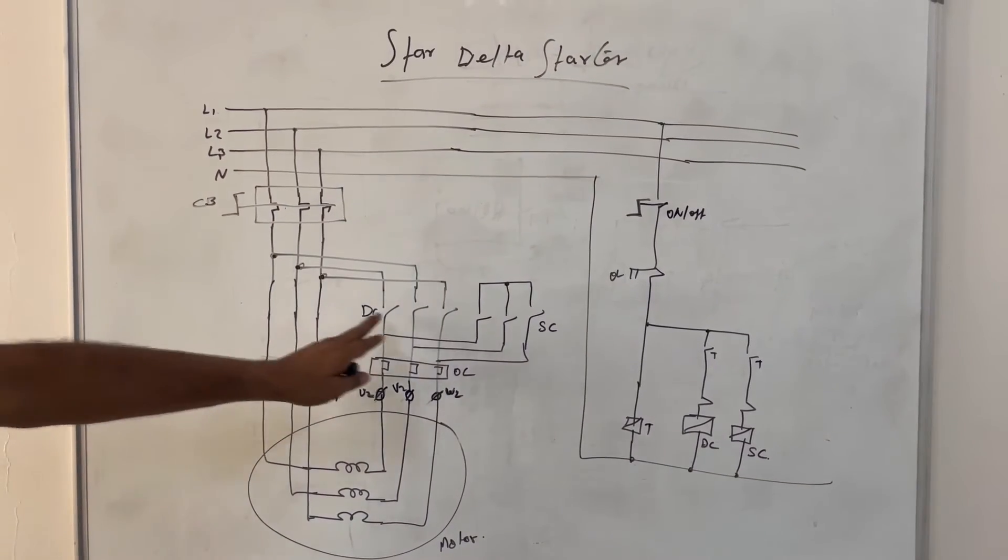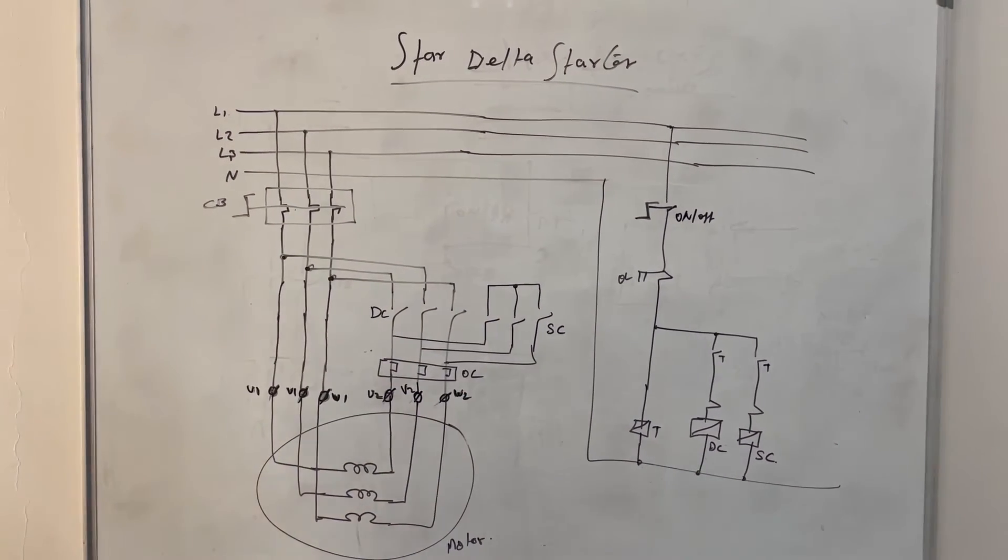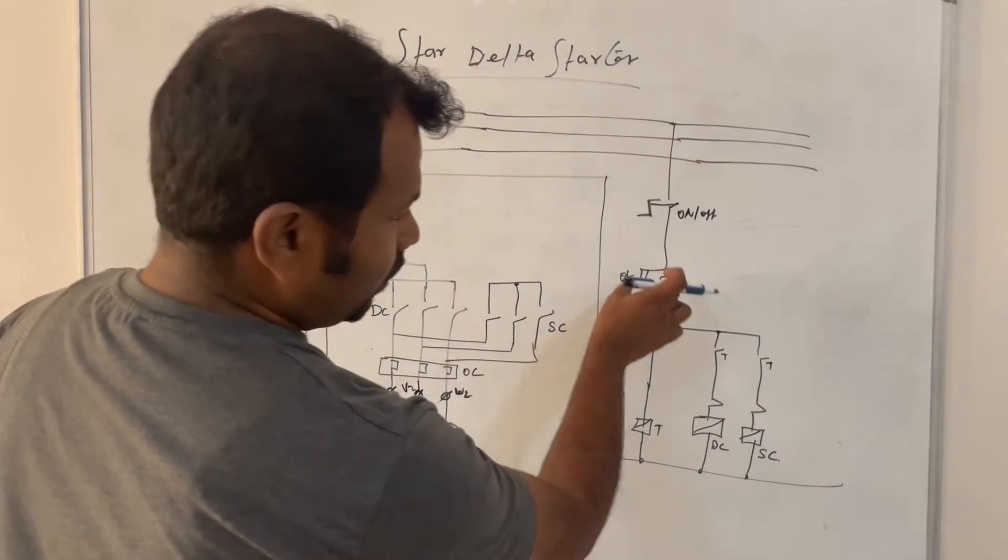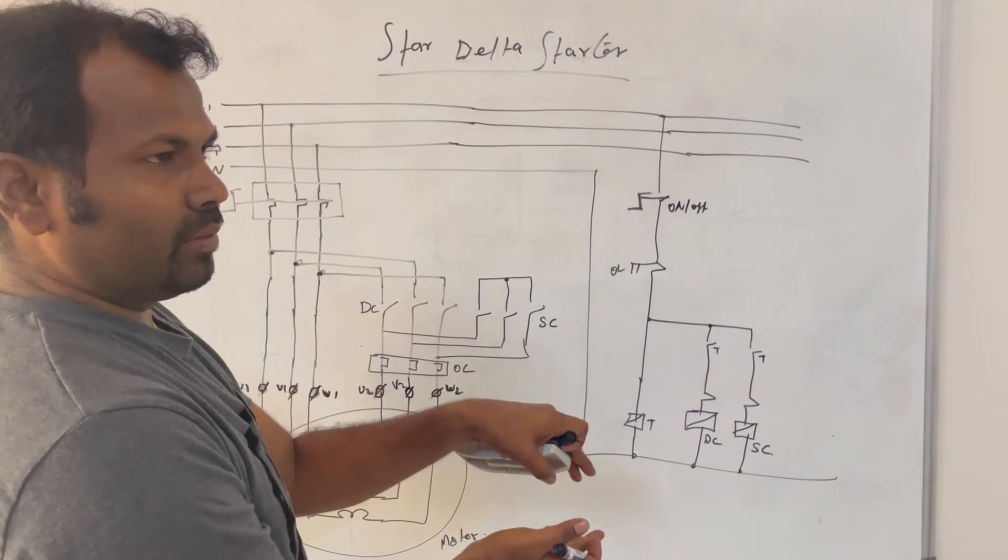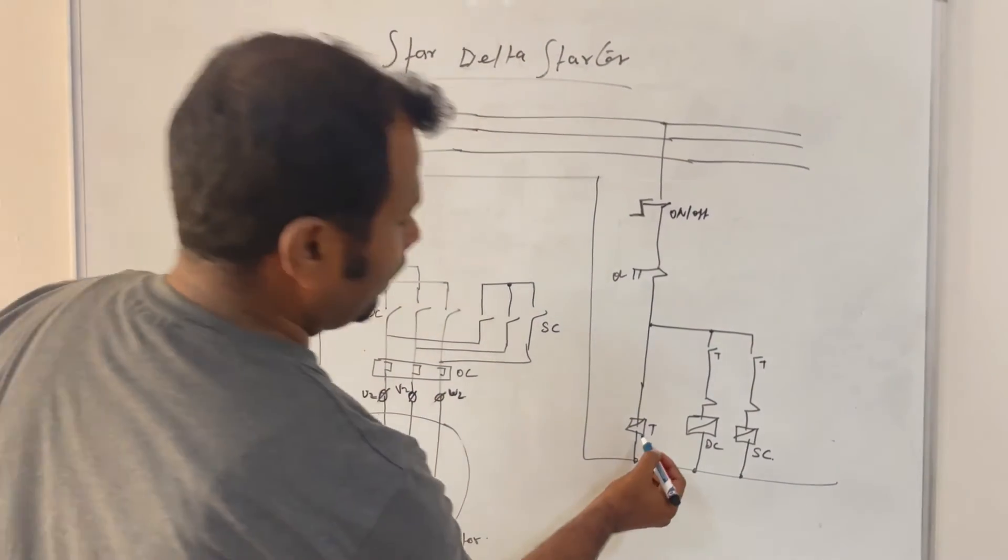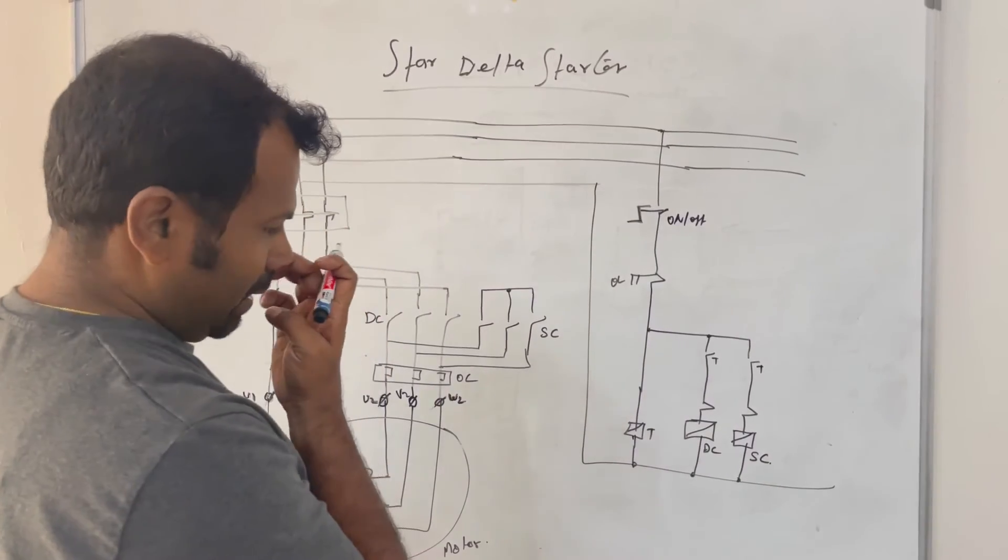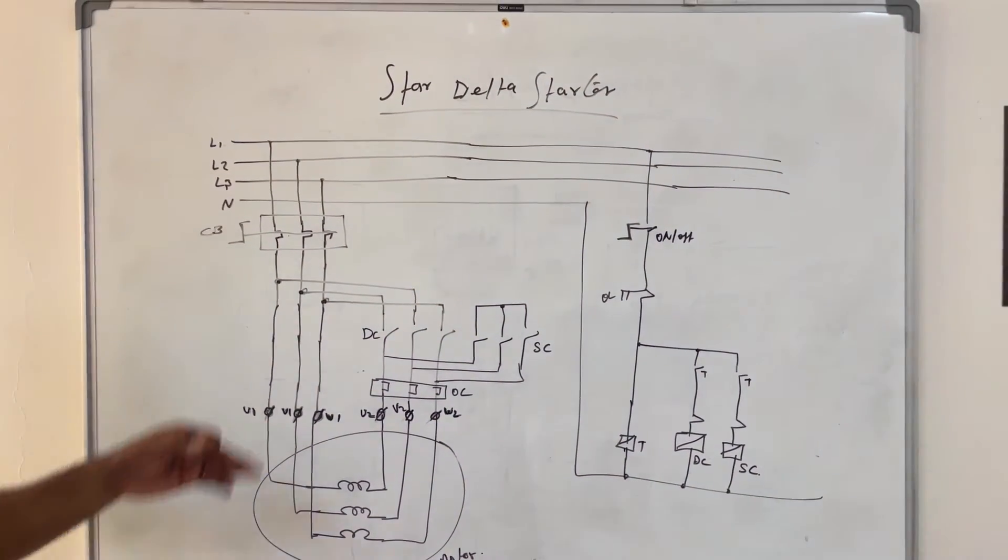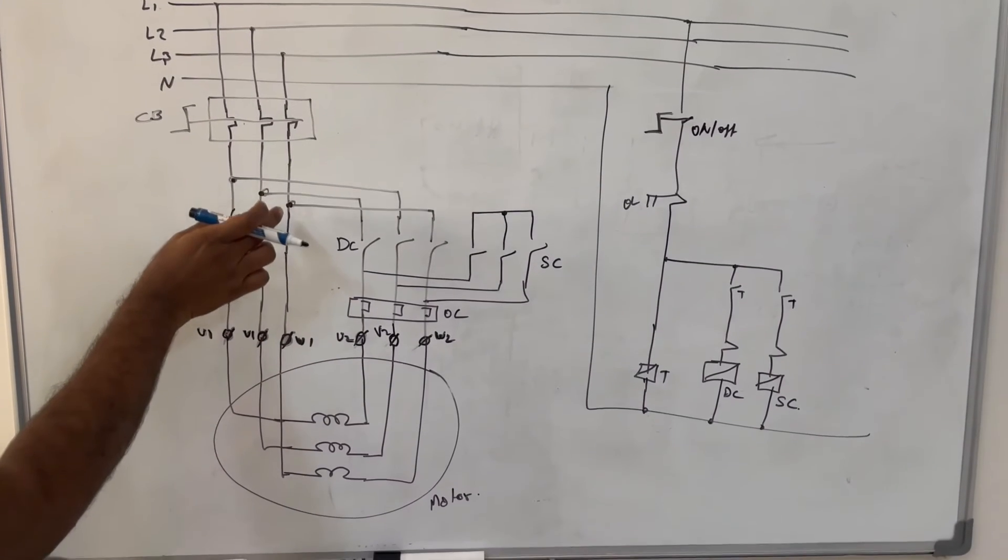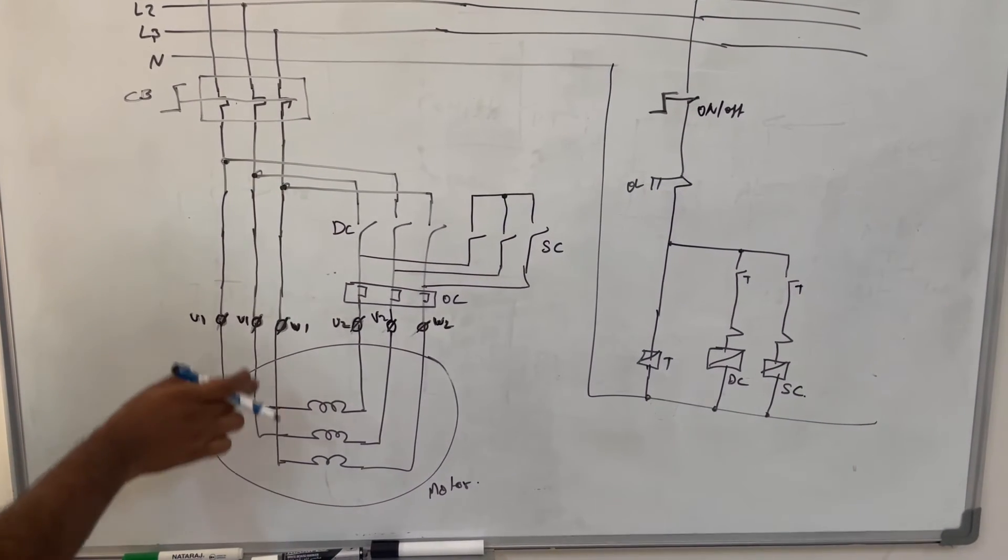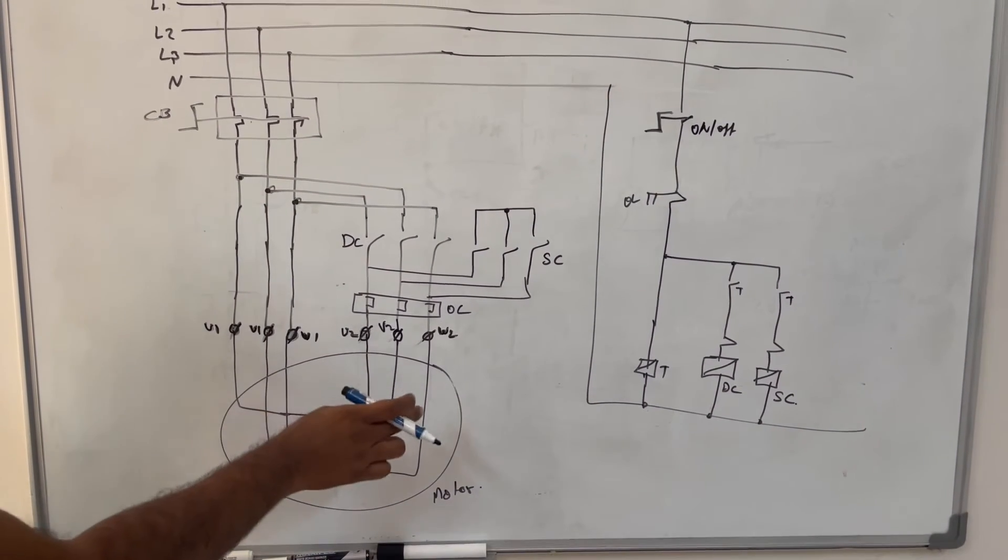And control circuit also modified. Here we cannot use any add-on timer or overload switches. So we can use only electrical operated timer. In this case what will happen? Three U1, V1, W1, these three terminals directly connected to motor leads. Only the other end is connected with star contactor and delta contactors.